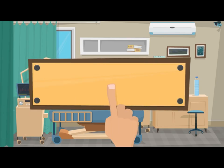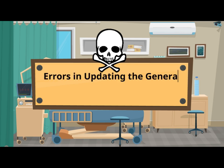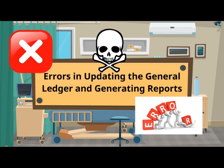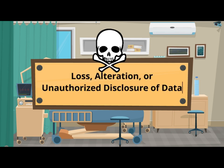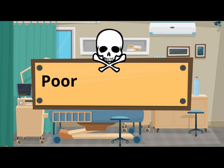There are three threats in the General Ledger and Reporting System. Threat 1: errors in updating the General Ledger and generating reports. Threat 2: loss, alteration, or unauthorized disclosure of data. Threat 3: poor performance.